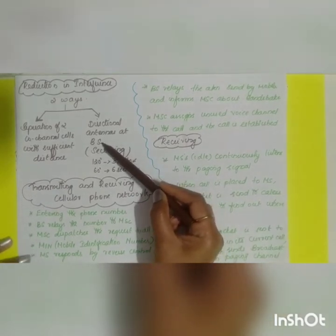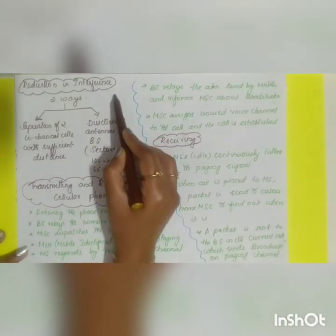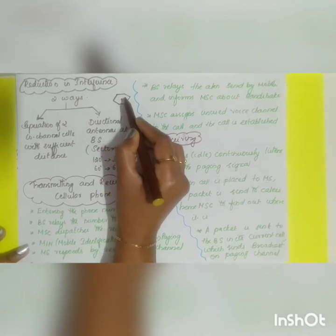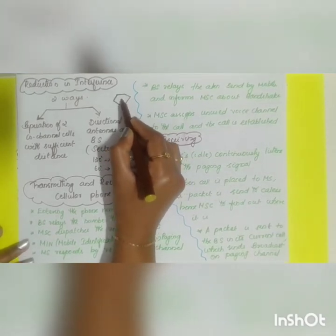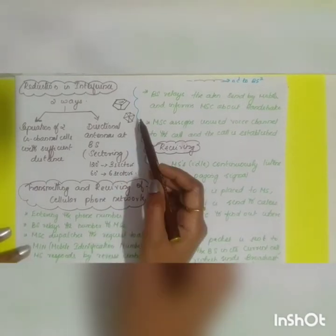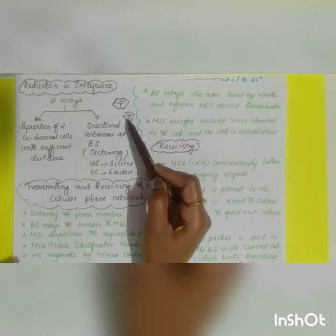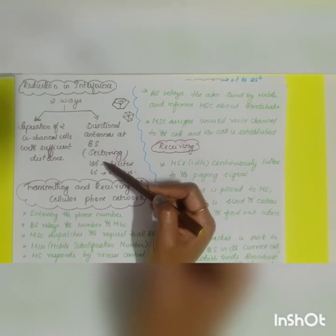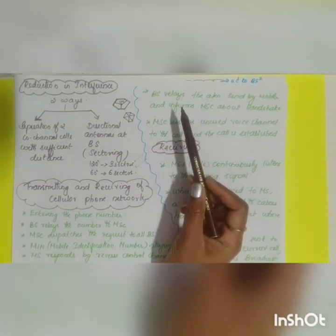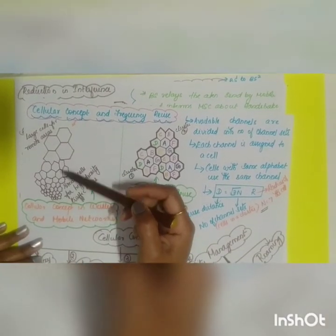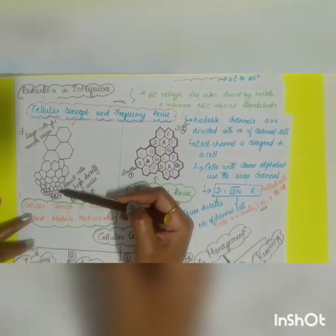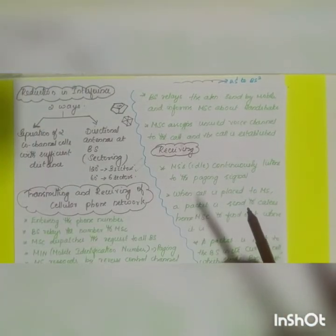The second way to reduce interference is by using directional antennas at the base station, a concept called sectoring. In sectoring, the radius of the cell remains the same but the cell is divided into sectors. The two popular sectoring divisions are 120-degree sectoring, which creates three sectors, and 60-degree sectoring, which creates six sectors. An advantage of small cells over large cells is that small cells require low-power antennas, whereas large cells require high-power antennas.